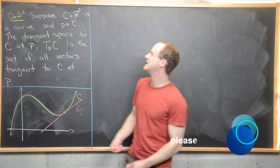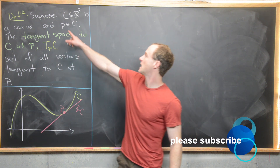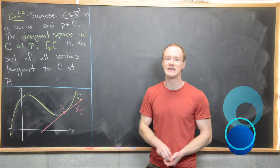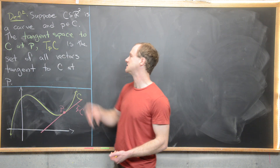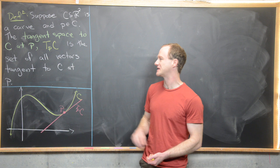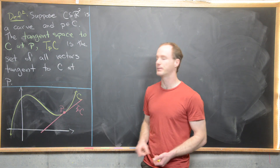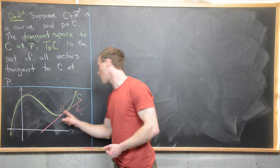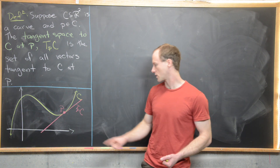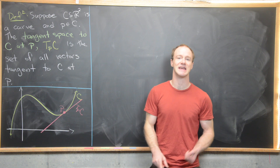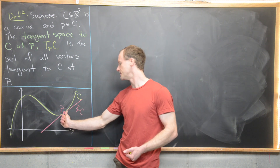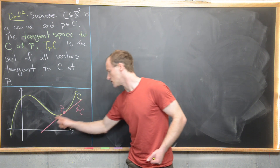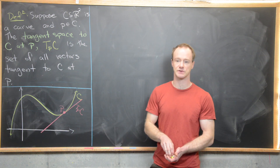Let's suppose that C is a curve in R2 and P is a point on that curve. What we want to define is the tangent space to C at P, and we will denote that by TPC. So that's the set of all vectors that are tangent to C at P. I've drawn a little picture here — we have our plane R2 with a yellow curve. I've put a point P on the curve, and the tangent space is this tangent line; elements of this tangent space are vectors pointing up or down along that line, and the line is really the span of all of those vectors.